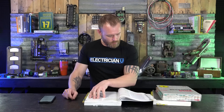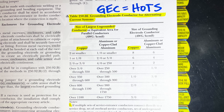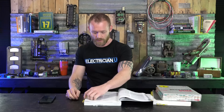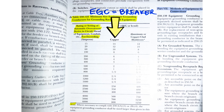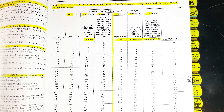Then I go to table 250.66 and highlight it. I used to highlight the entire copper column on both sides, but I've been doing this long enough that I know what that table contains. Next I go to table 250.122 and highlight the name — you could also highlight the entire left-hand column and the copper column to show what breaker sizes go with what conductor for equipment grounding conductors.